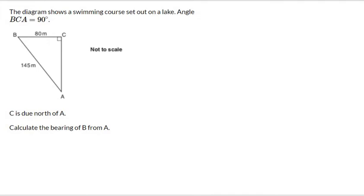This time we don't have to hunt for a right-angled triangle. It's right in front of our noses. The diagram shows the swimming course set out on the lake. Angle BCA is 90 degrees. C is due north of A. Calculate the bearing of B from A. Now remember the from is the important bit. So we're going to measure the angle at A. And bearings always go clockwise from north. So let's just see. So we're at A. There's our north line. And the angle that we're after is going to be this one here.